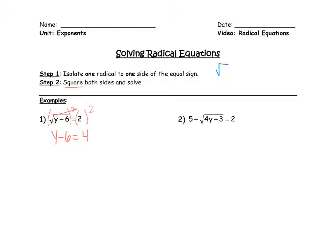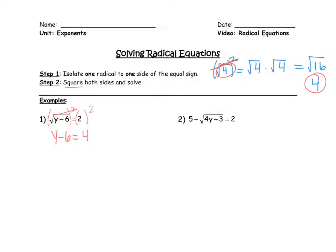Say I have radical 4 and I want to square it. Radical 4 squared is the same thing as saying radical 4 times radical 4, which when we multiply them together is radical 16, and the square root of 16 is 4. So when you square a radical, the square and the square root cancel each other out and we're just left with the inside.